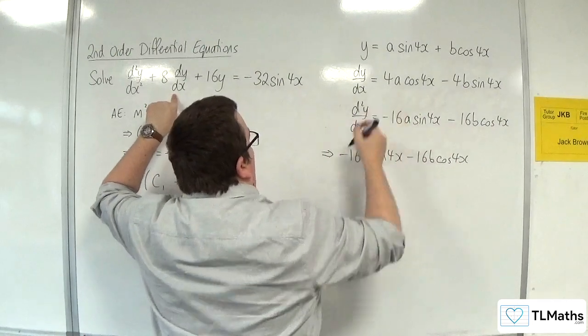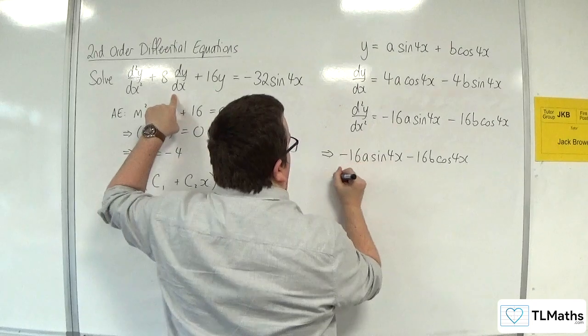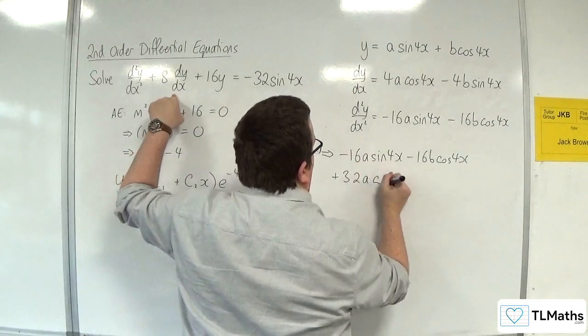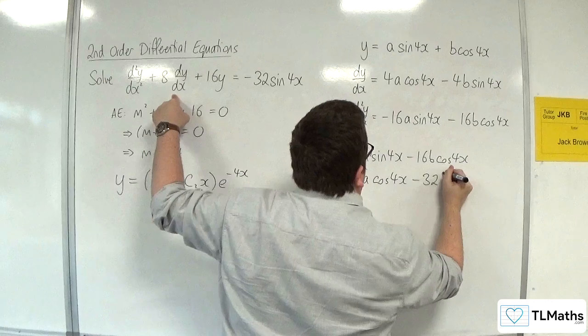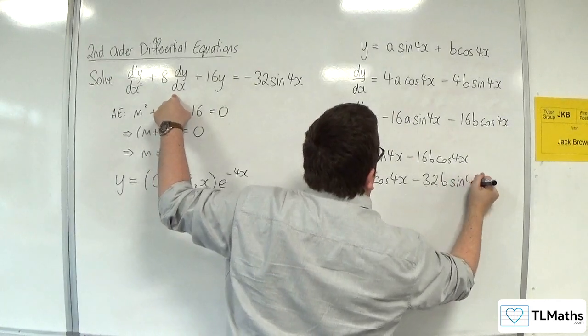So 8 lots of 4 is 32, so plus 32a cos(4x) - 32b sin(4x).